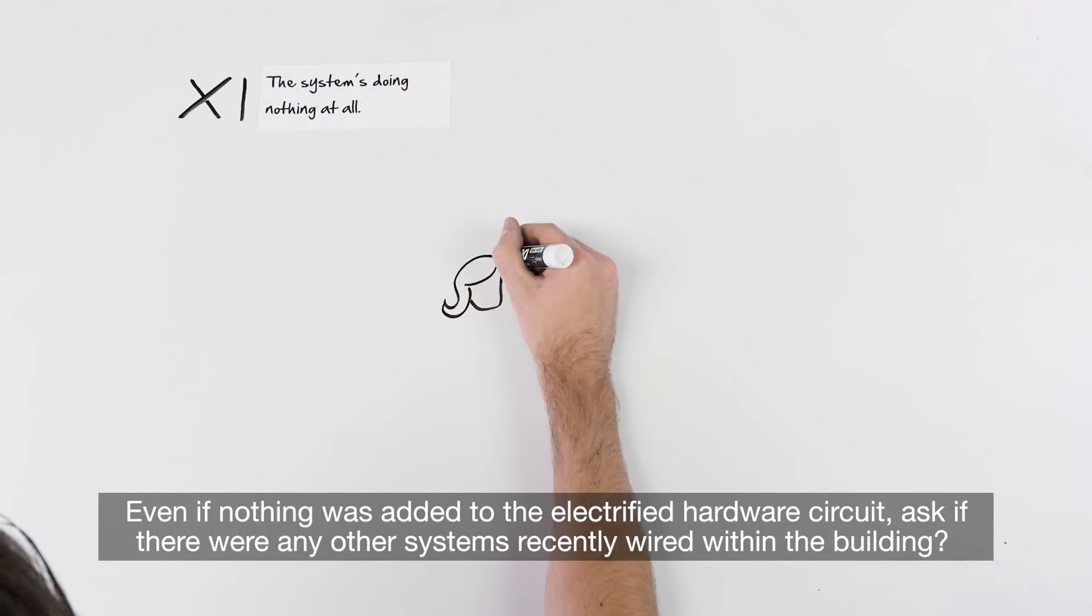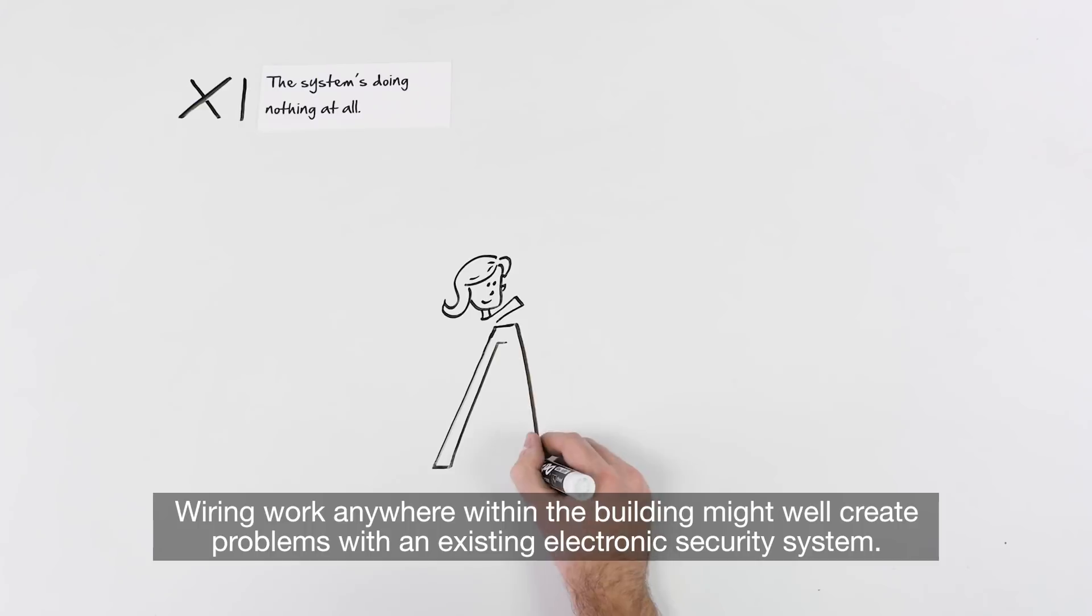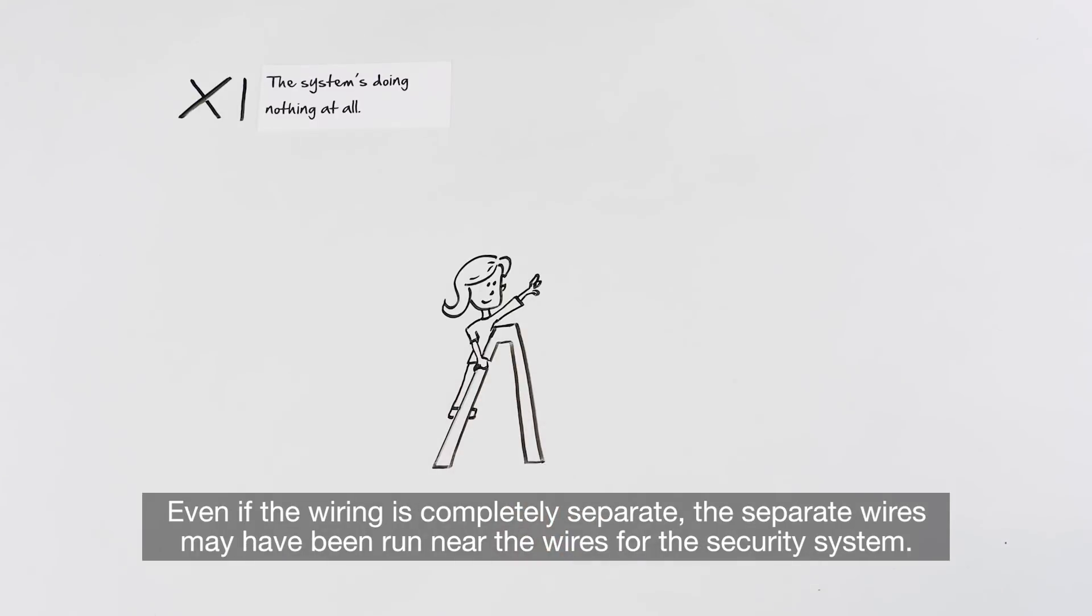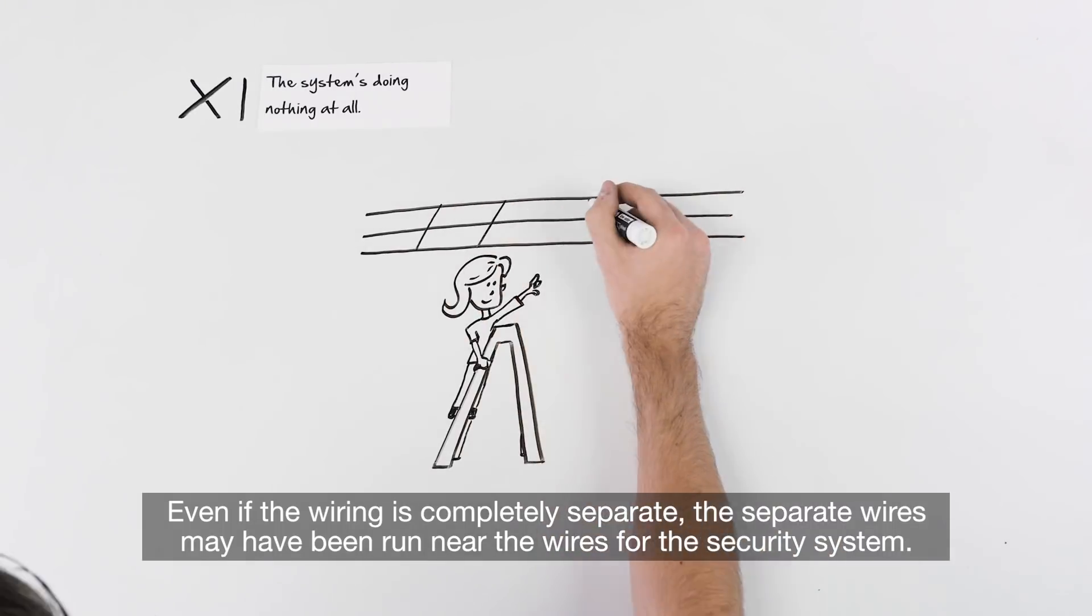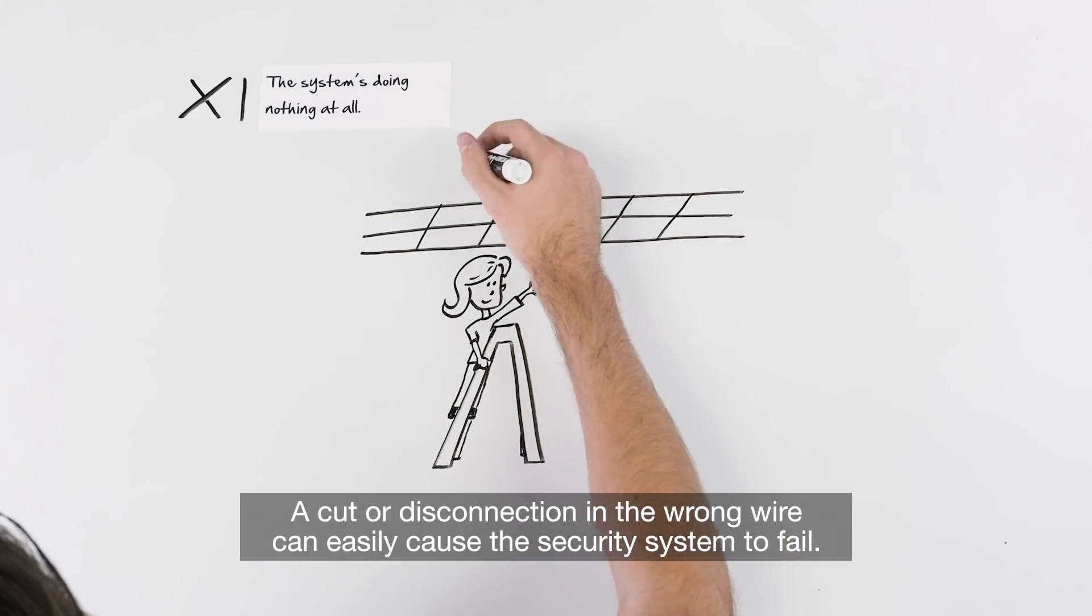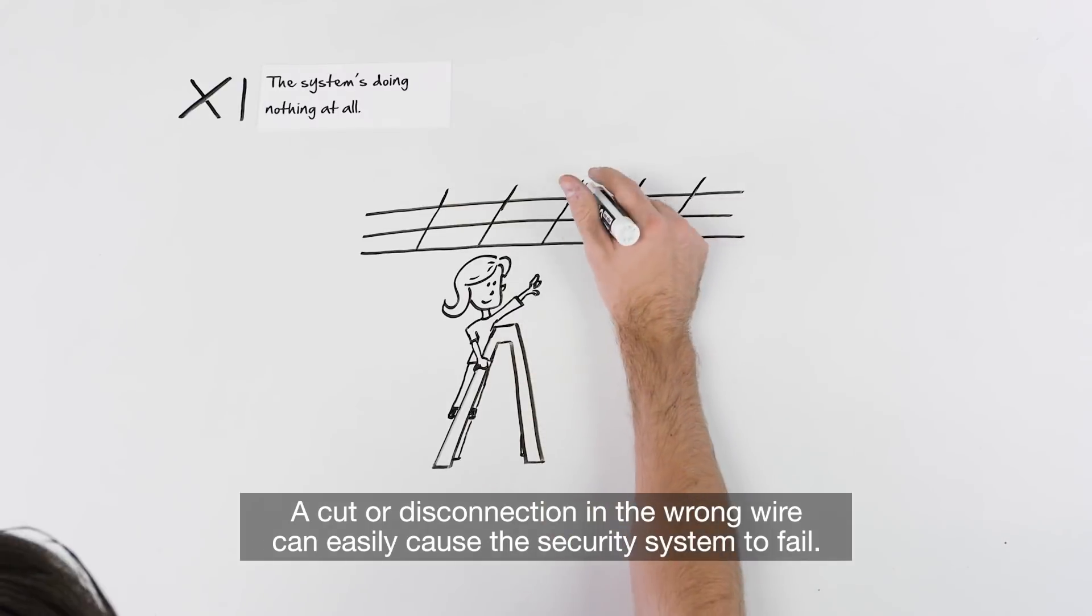Even if nothing was added to the electrified hardware circuit, ask if there were any other systems recently wired within the building. Wiring work anywhere within the building might well create problems with an existing electronic security system. Even if the wiring is completely separate, the separate wires may have been run near the wires for the security system. A cut or disconnection in the wrong wire can easily cause the security system to fail.